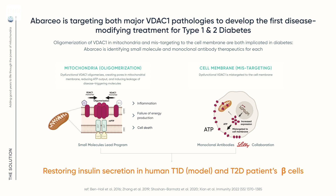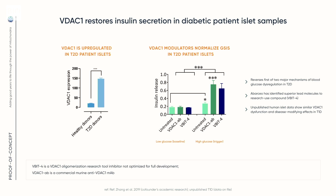Here's some data showing what actually happens. You can see that VDAC1 is upregulated in type 2 diabetics, and when we treat, we actually restore the function. This next slide is my favorite one — it shows exactly what we can do for patients in the end.